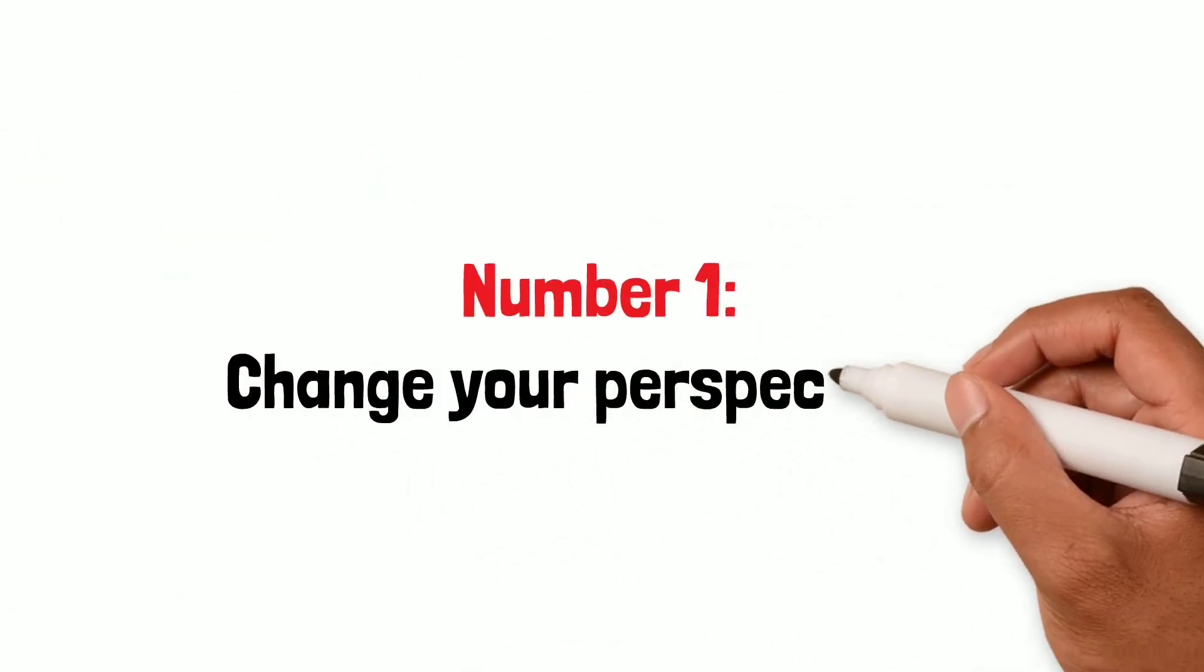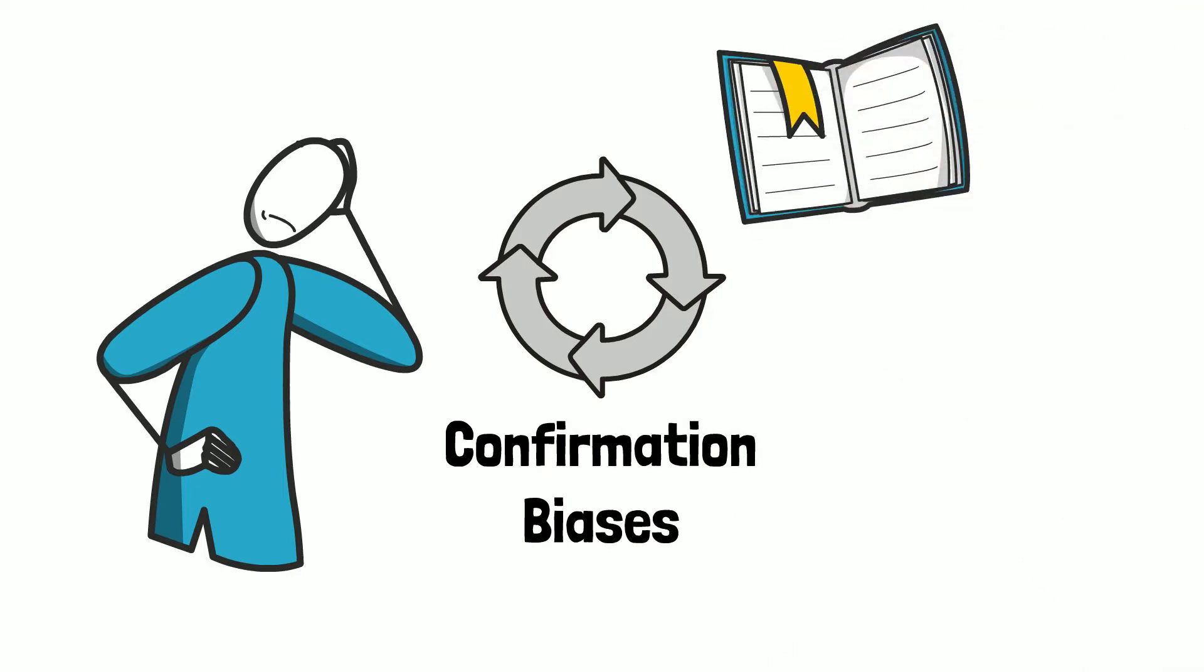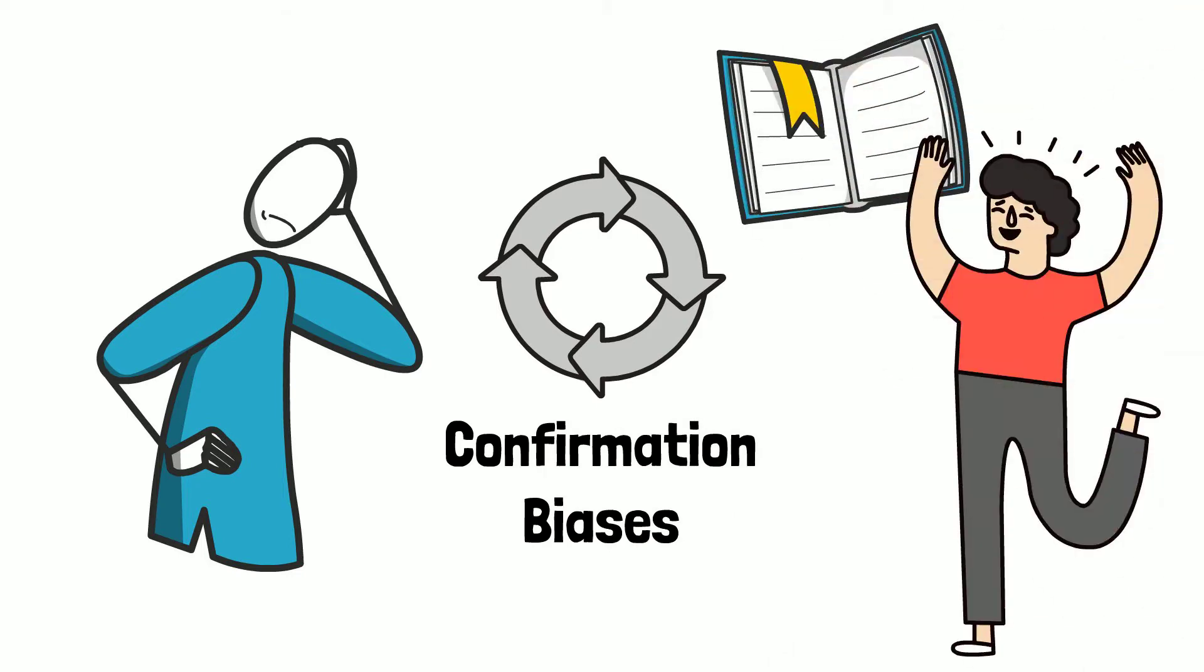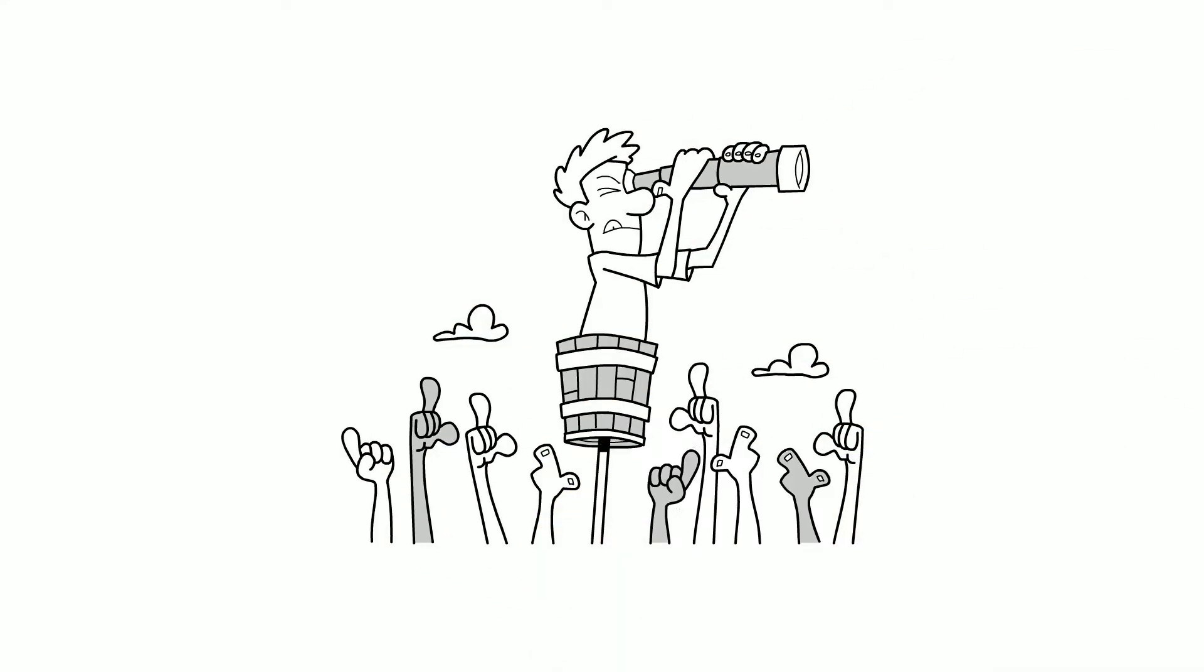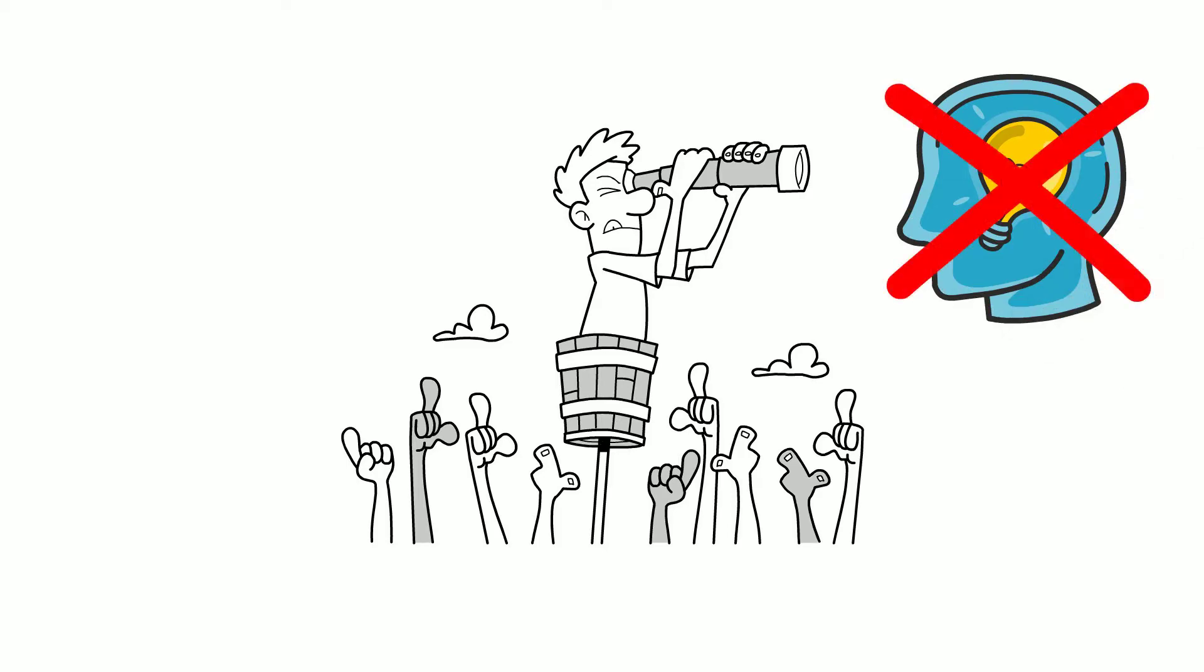Number one: change your perspective. It's easy to become trapped in a cycle of confirmation biases that pander to one fixed narrative. This narrative may be easy to understand and give satisfactory answers to complex questions that permeate our lives. However, Brian Tracy is convinced that only looking at the world through one fixed perspective will not adequately unlock your brain's potential.